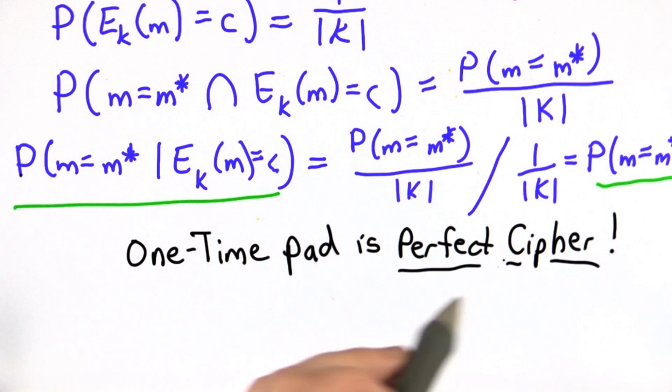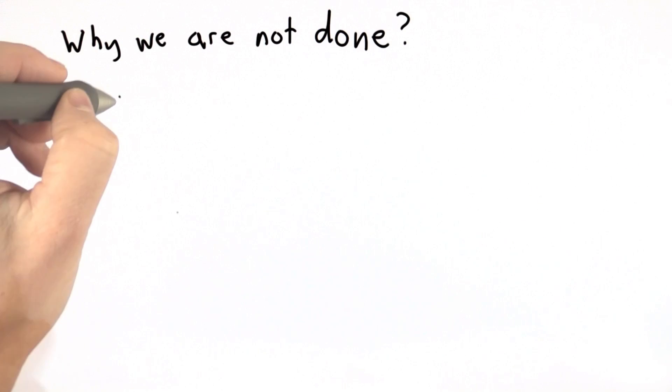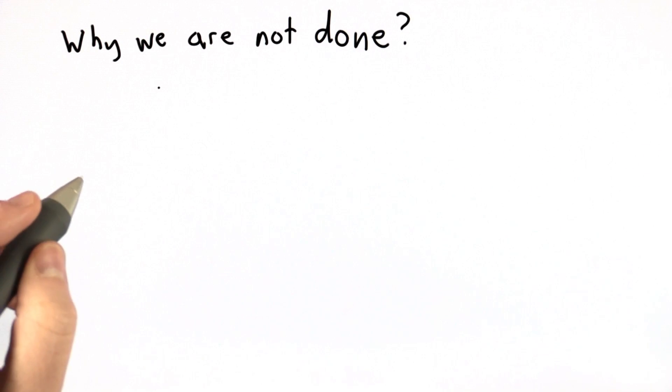We've achieved our goal of perfect secrecy using a cipher that was invented over 100 years ago, and is actually provably perfectly secret. So we're not quite done yet. There's some pretty serious problems with the one-time pad.